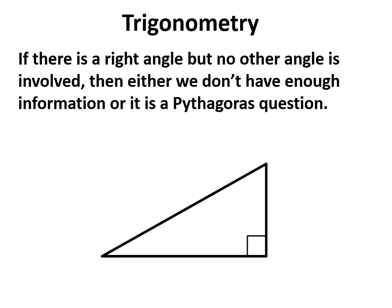We identify we have a right angle triangle, but a trig question will always have an angle. A question like this one where we have two side lengths and we're trying to find the third side length with no angle involved is a Pythagoras question, not a trig question.